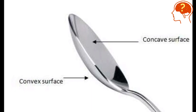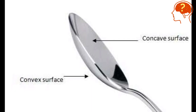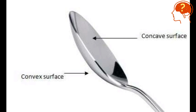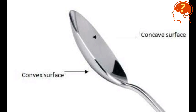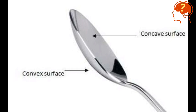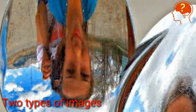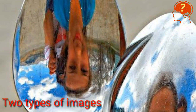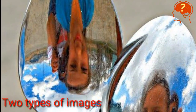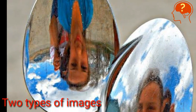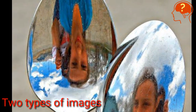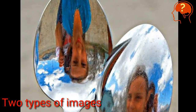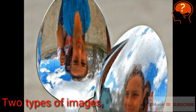So a spoon has two types of surfaces: one surface acts like a concave mirror and the other acts like a convex mirror. That's why one side forms a straight image and the other side of the spoon forms an inverted image.